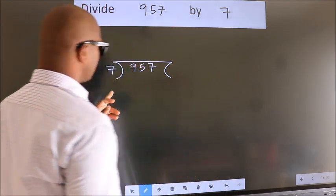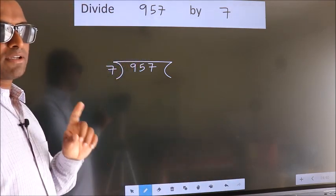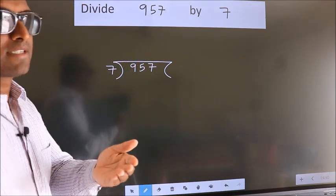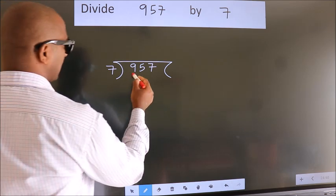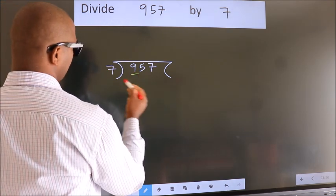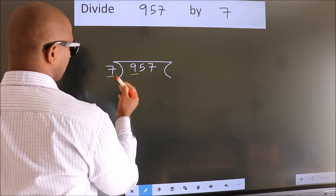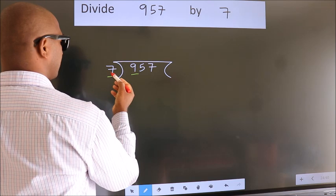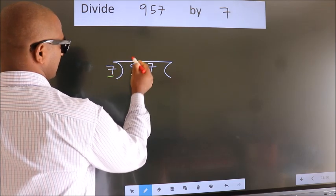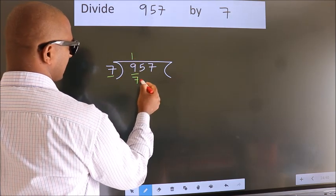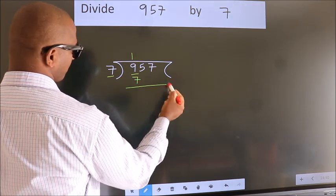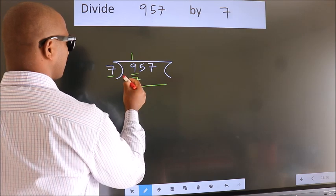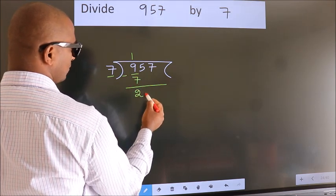This is your step 1. Next, here we have 9, here 7. A number close to 9 in the 7 table is 7 once 7. Now we should subtract. We get 2.